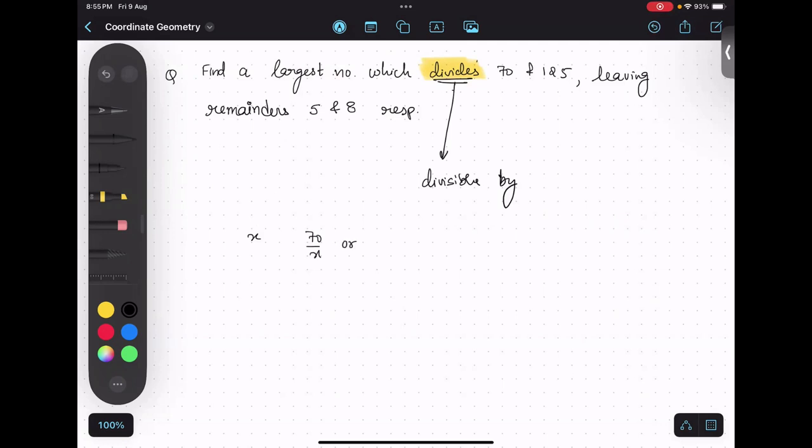70 upon x, or x upon 70? Find the largest number which divides - it's 70 upon x. Very good, because x is dividing 70. So this is x divides 70, isn't it?